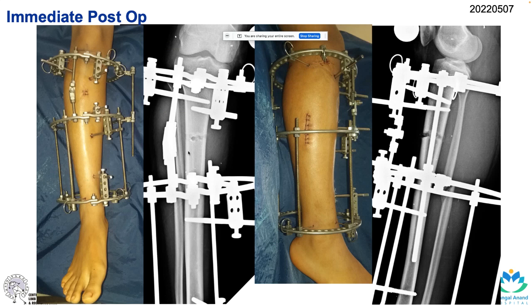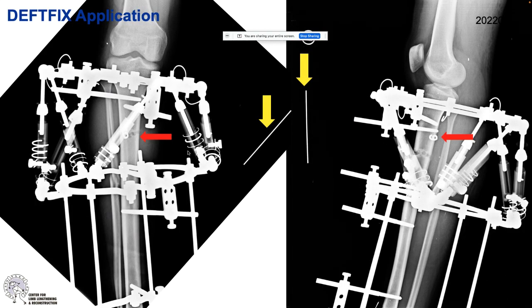We plan for the surgery. We usually apply the frame with a simple hinge for ease of application and apply the depth fix. In the post-operative video you can also apply the depth fix intraoperatively. The osteotomy is done a little further away from the CORA to achieve stability at the proximal tibia.